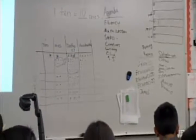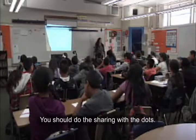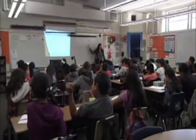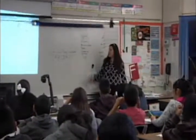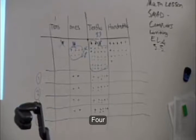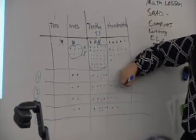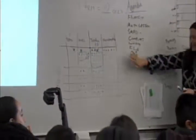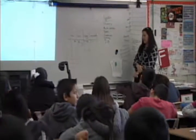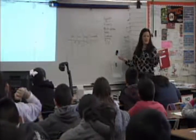The class counts out 16 hundredths together and distributes them equally among the four groups: 'One, two... sixteen. Woo! You got to pay attention to how far you need to go. We had sixteen.' The teacher then asks: 'What did we do and how did that help us solve the problem?' Students share with partners before coming back together.